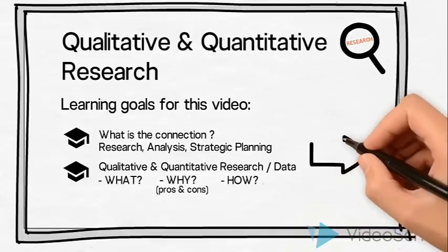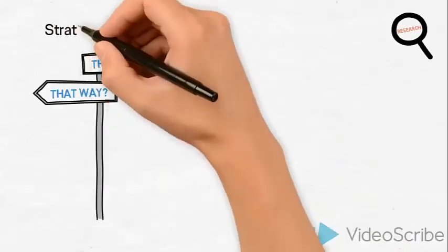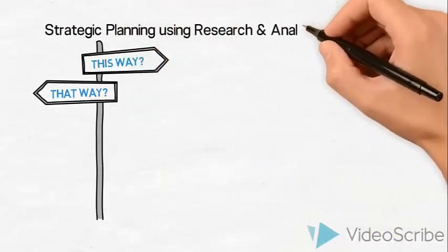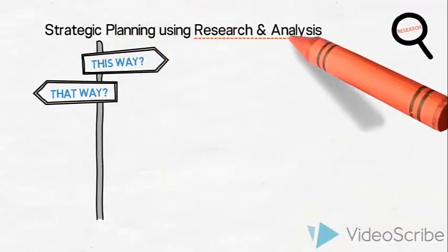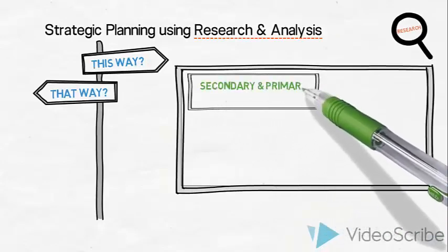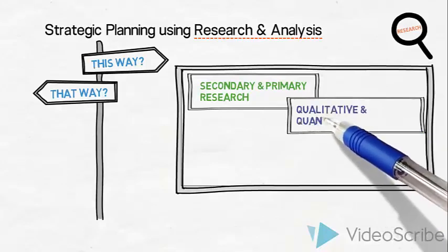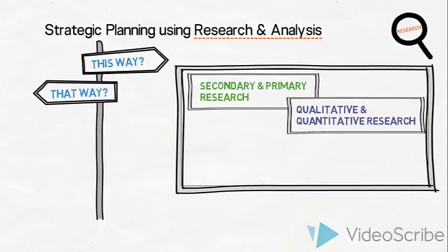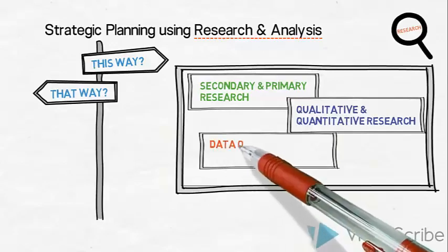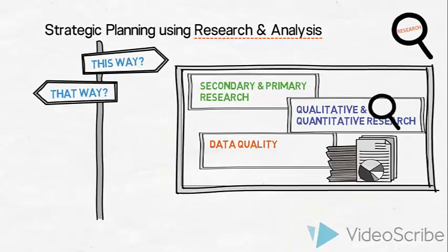So let us begin. When organizations enter into strategic planning, they conduct different types of research and analysis. They might conduct both secondary and primary research, consider using qualitative and/or quantitative research and different survey types, and check the quality of their research data by critically applying the terms validity and reliability.